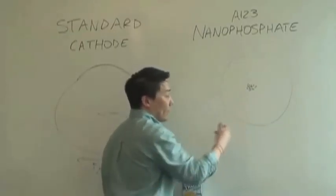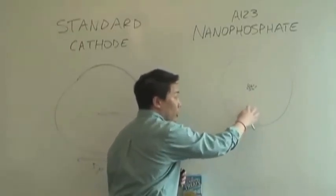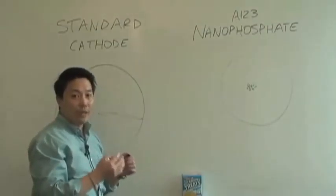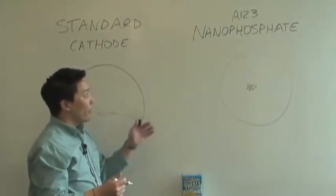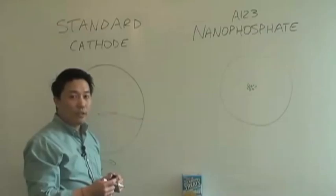So the result at the battery level is that this kind of structure allows you to have very high power, very high rate capability, and that's one of the primary advantages of A123's nanophosphate.